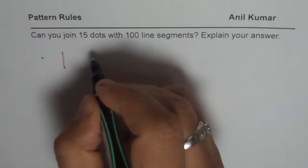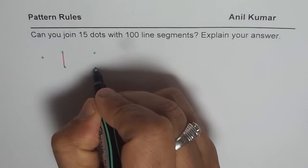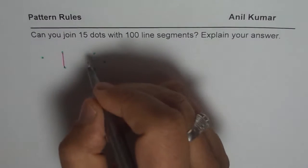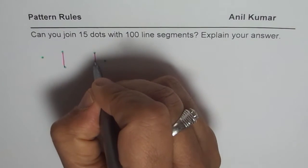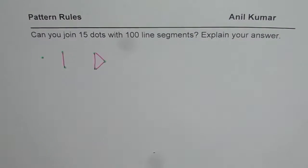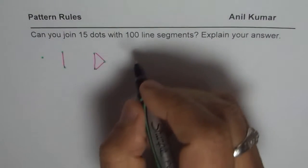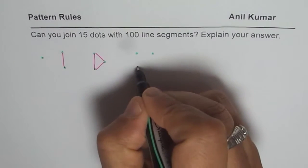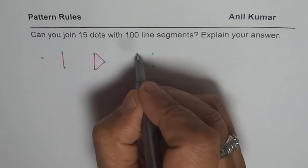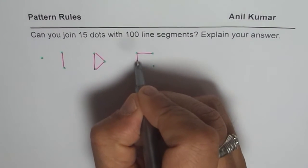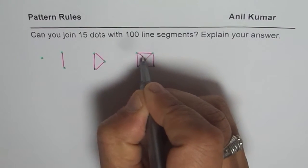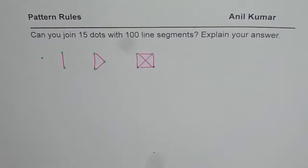If I have three dots, I need one, two, three line segments. Now if I have four dots, I could have one, two, three, four, five, and six line segments.